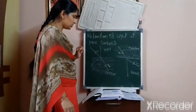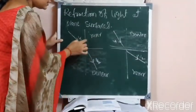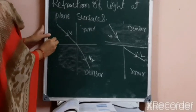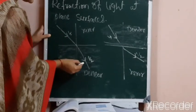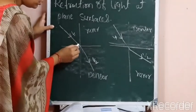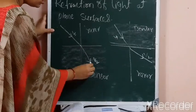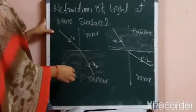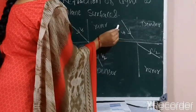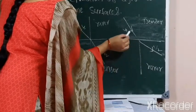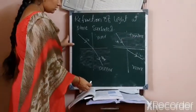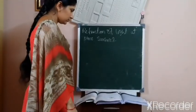Shall we look at the picture? In this picture, this is the rarer medium and this is the denser medium. Light travels from rarer medium to denser medium — light travels towards the normal. In this case, light travels from denser to rarer — light travels away from the normal.